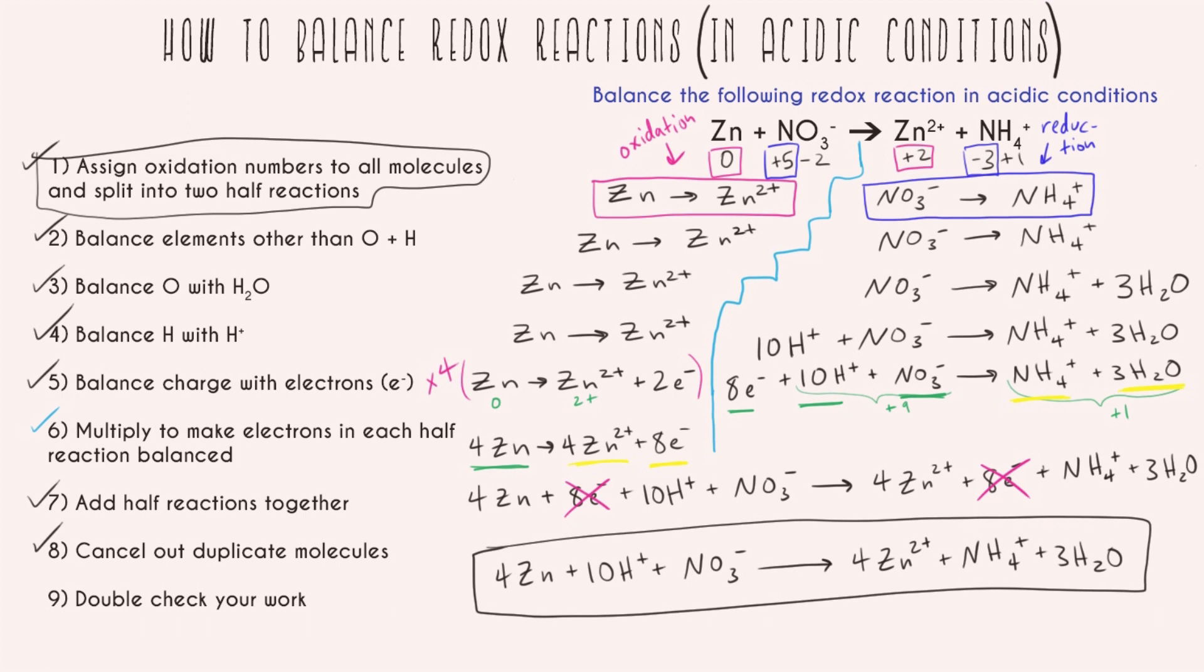And then I always have step number nine, double check your work. So it's always a good idea to just go back, look at all your steps, and make sure that you didn't make any mistake. So just scanning, I see my half reactions look good, splitting them up. I definitely don't have to add water or hydrogen to the zinc, it's only the other side. And if I was doing this on a test obviously I'd be much more thorough, I'd really double check everything. But at a quick glance this looks good. And this is my final balanced reaction.